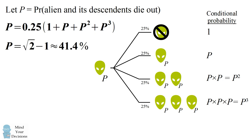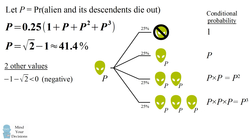To be comprehensive, we should consider the other solutions to this equation. One solution is negative, which can be disregarded because the probability cannot be negative. But the other solution is equal to 1, which would mean there is a probability of 1 — certainty — that the aliens would go extinct. How do we know that this is not the solution, and that the correct answer is 41.4%?